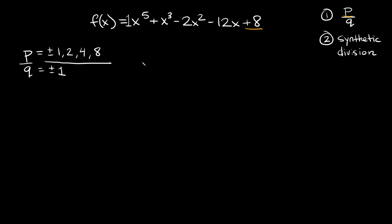So what would be our possible solutions? Positive 1 divided by positive 1 is just 1. Positive 2 divided by positive 1 is 2. Positive 4 divided by 1 is 4, and we have 8. Then negative 1 divided by positive 1 is negative 1, negative 2 divided by positive 1 is negative 2, and we'd get negative 4 and negative 8. These are all the possible solutions we have. The way you check each one is by using synthetic division.